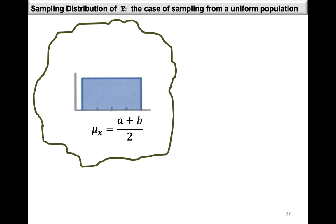Suppose that the underlying distribution of the random variable is the uniform distribution. Then we're able to calculate the population mean, which will be (a + b) / 2, and the population standard deviation, which is the square root of (b - a)² / 12, where a is the lower limit and b is the upper limit.